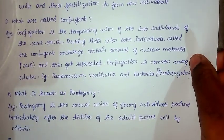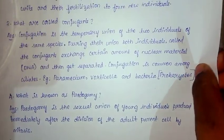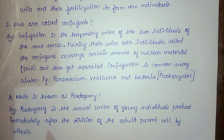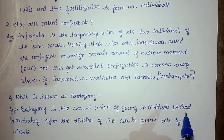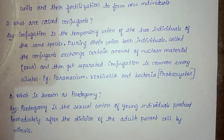For the fourth question, the correct answer is: paedogamy is the sexual union of young individuals produced immediately after the division of the adult parent cell by mitosis.